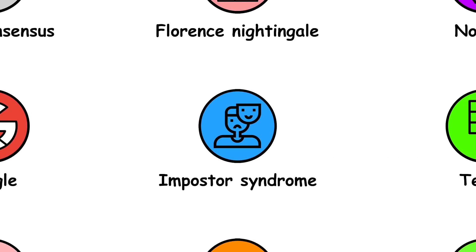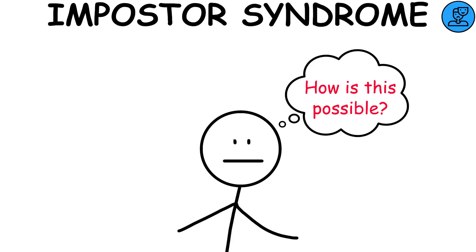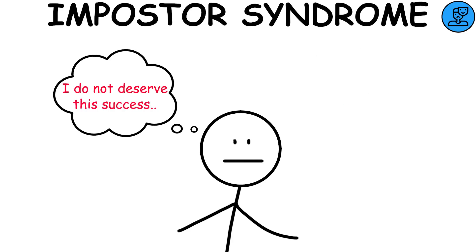Imposter syndrome. The imposter syndrome effect occurs when a person is convinced that they have achieved certain goals by pure chance or even by mistake.